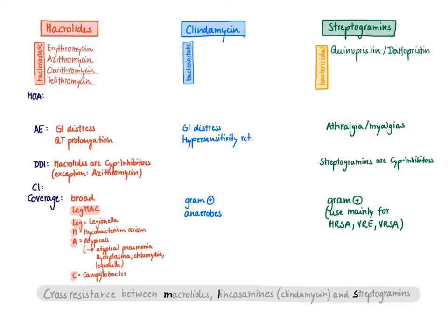An important final point: there is cross-resistance between macrolides, clindamycin, and streptogramins. These three drug classes bind to very similar sites on the ribosome. If a bacterium becomes resistant against macrolides by slightly changing the target site, it will most likely also be resistant against clindamycin and streptogramins because the binding sites are so close together. Therefore, whenever you have a bacterium resistant against macrolides, you cannot use clindamycin or streptogramins either.